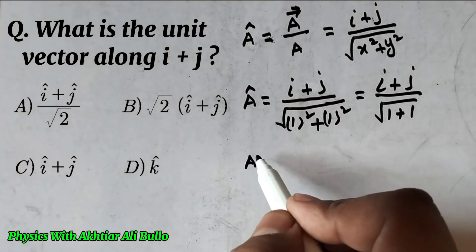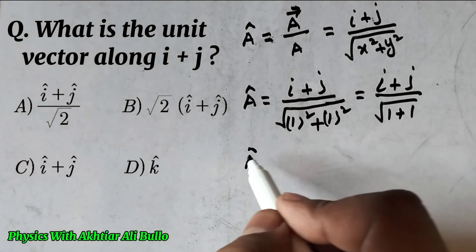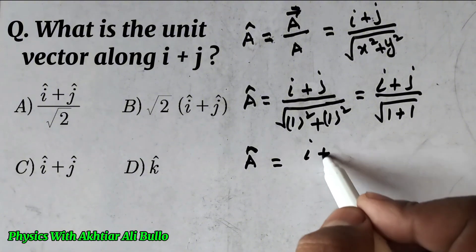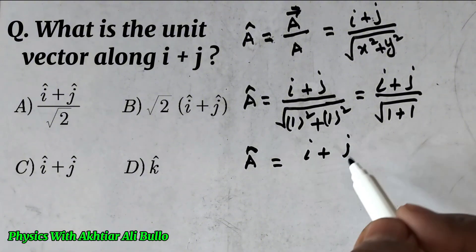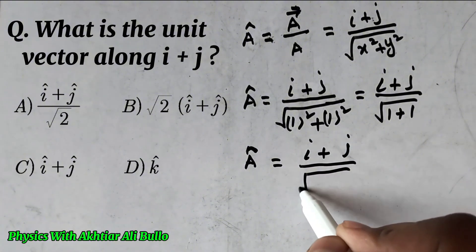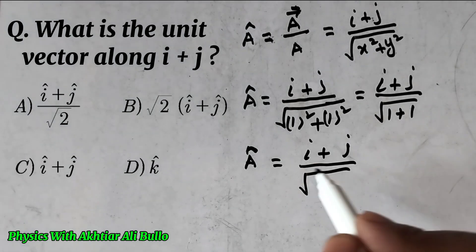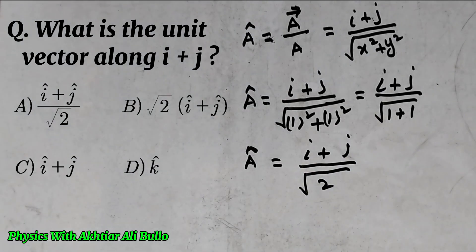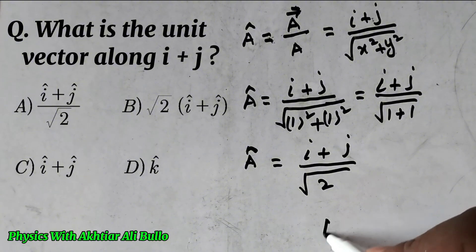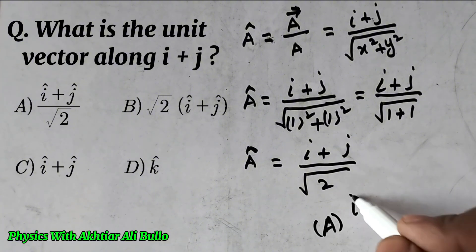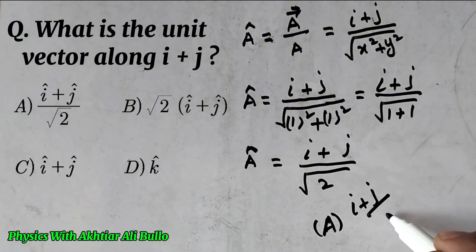So the unit vector will be obtained as i plus j divided by under root 2. Therefore, the correct option is a: i plus j upon under root 2.